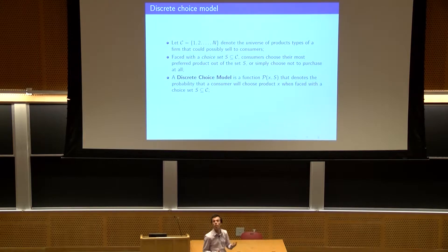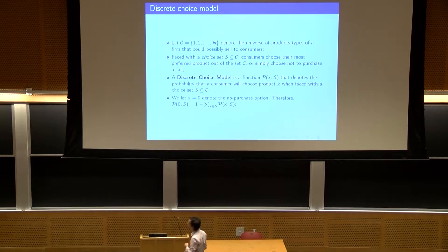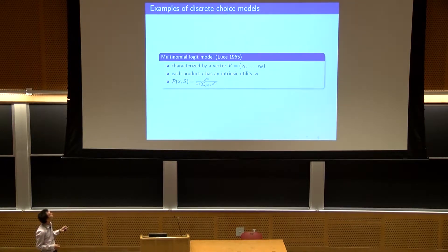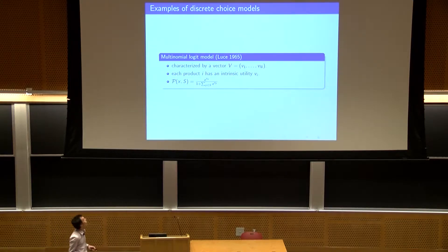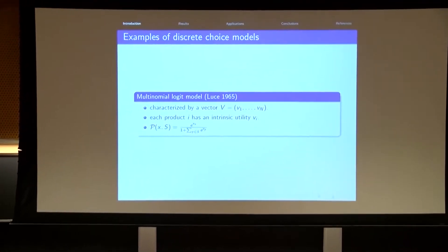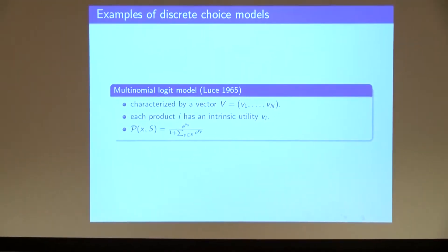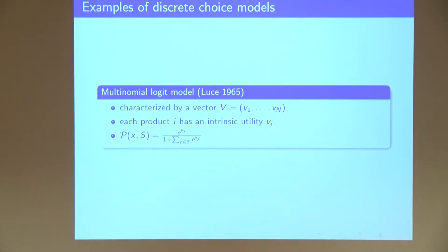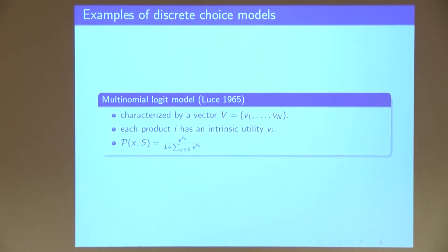Different choice models appear in the literature, and all of them can be expressed inside this function. Depending on how complicated the choice model is, this function becomes more or less complex. We denote product zero to be the no-choice option, meaning that if someone doesn't buy anything, they are choosing product zero. One of the most famous discrete choice models is the multinomial logit model, which is characterized by a vector of intrinsic utilities for each item, and the function P(X, S) is very simple — which is really one of the reasons why it's so popular.